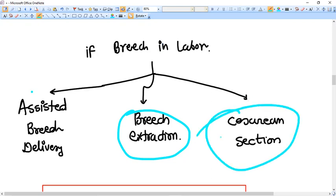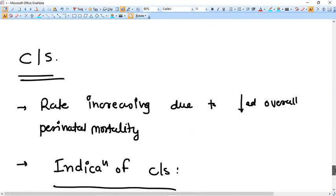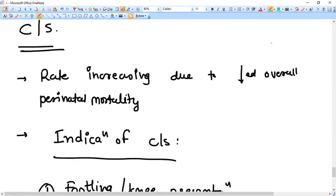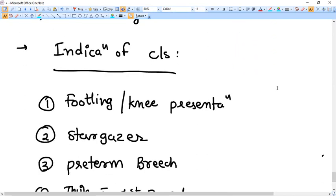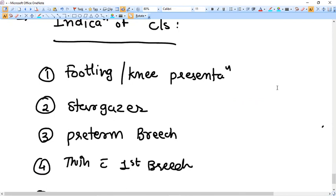If we talk about caesarean section, then we should know that the rate of caesarean section in case of breech presentation are continuously increasing because of decreased overall perinatal mortality. What are the indications of caesarean section? Remember my friend there is never ever complete indication of caesarean section in case of breech. Not very gold standard indication of caesarean section in case of breech. It depends on how the labor presents.